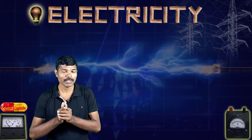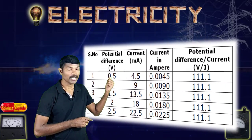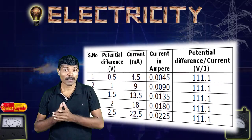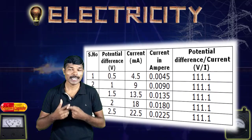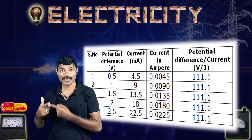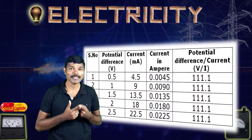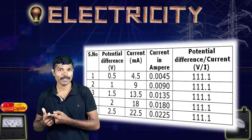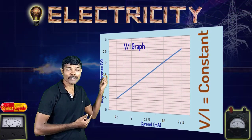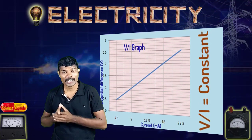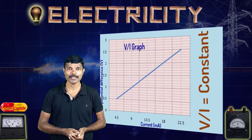After doing the experiment, we now have the values of V and I. In the first column you see the value of V at each instance, and accordingly the current also increased. In the final column, you see V/I. If you find the value of V/I in each instance, you are getting the same value. From this, we can understand that when we increase the potential difference, the current also increases, but the ratio V/I remains constant. If we plot a graph from the values of V and I, we get a straight line, which indicates a constant. This constant V/I is known as resistance.